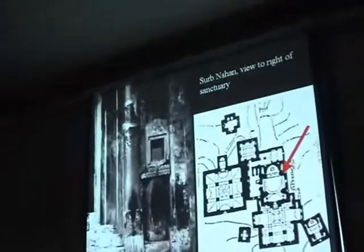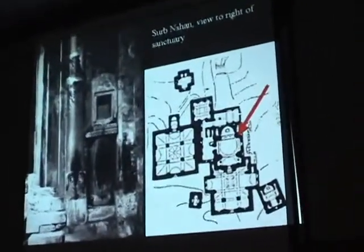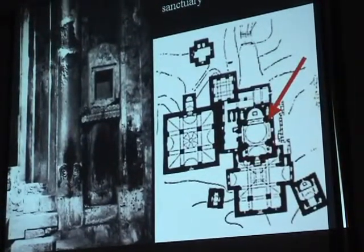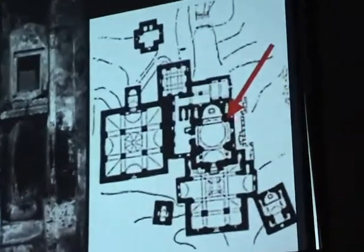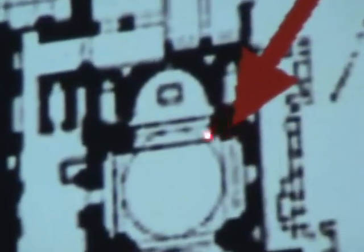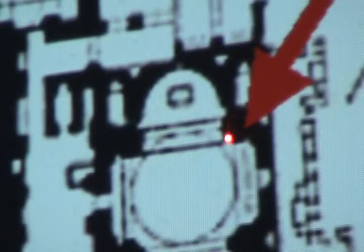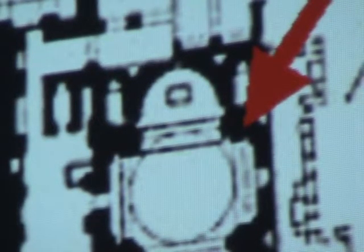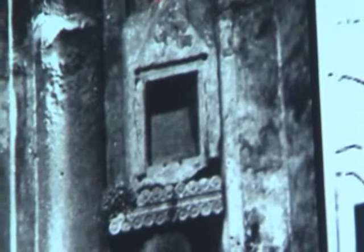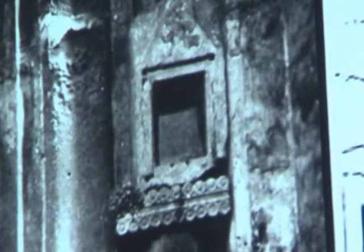Here is another reliquary, not far away, at the monastery of Hachpat. The reliquary is in the main church — the church of Surt Nishan — situated in front of a large pier that supports the dome, inserted into this support and sitting on a column. It has a gabled roof, though there has been some damage to the top. We can see it takes the form of a building and has a large opening, most likely for relics.